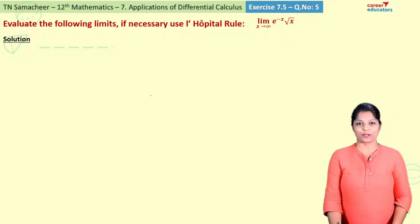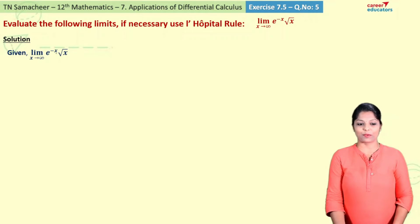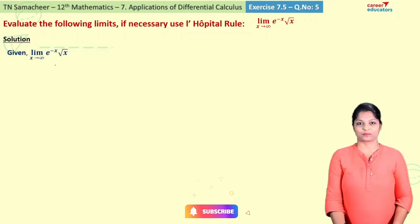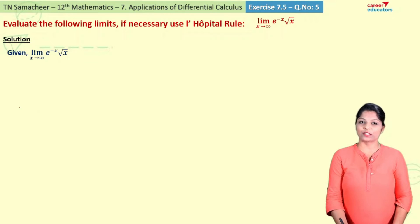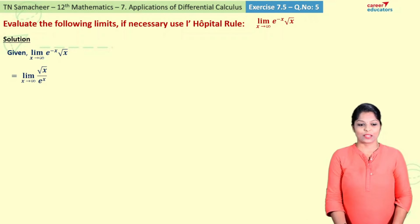Let's see how to solve this problem. Given: limit x tends to infinity of e power minus x into root x. In the first step, simplify the given function before applying the limit. We rewrite it as root x divided by e power x, moving e power x to the denominator.